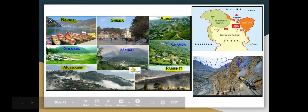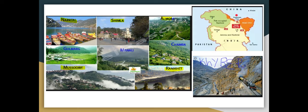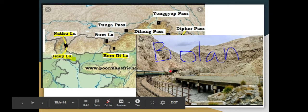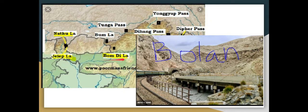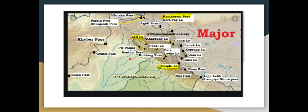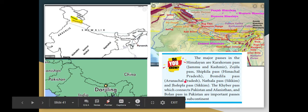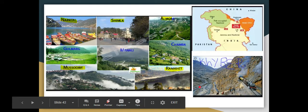The major passes in the Himalayas are: Karakoram Pass in Jammu & Kashmir, Zoji La in Himachal Pradesh, Nathu La and Jalep La in Sikkim, Bomdila in Arunachal Pradesh, and Shipki La in Himachal Pradesh. The Khyber Pass connects to Pakistan.